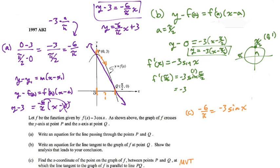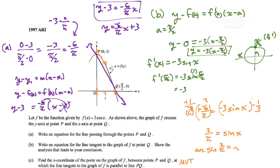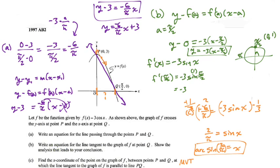To isolate sine x, divide both sides by negative three, which is the same as multiplying by negative one-third. The negatives cancel and the six becomes two, giving sine x equals two over pi. Then taking arcsin of both sides: x equals arcsin of two over pi. We can safely plug two divided by pi into arcsin, and that is our x-coordinate.